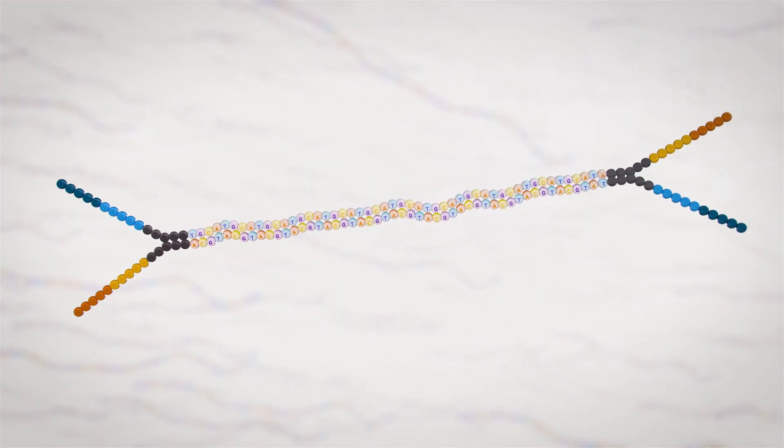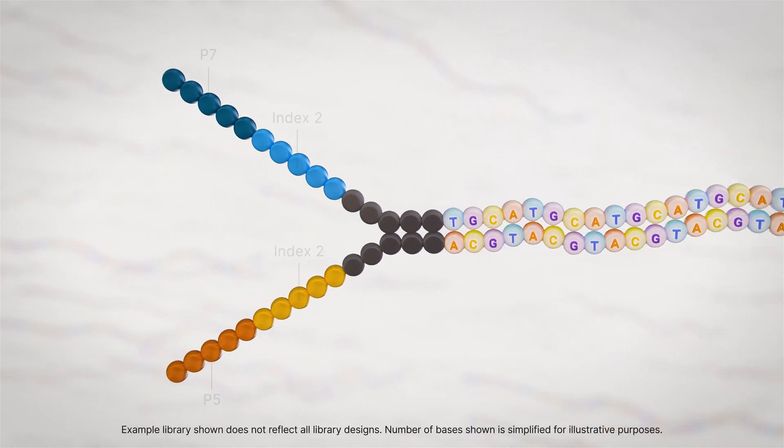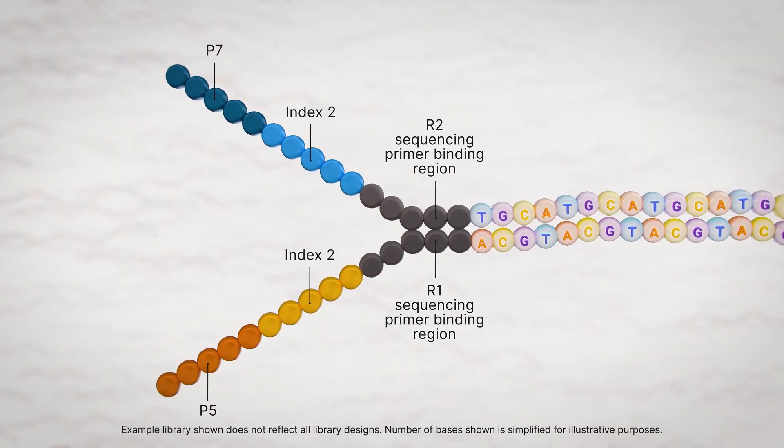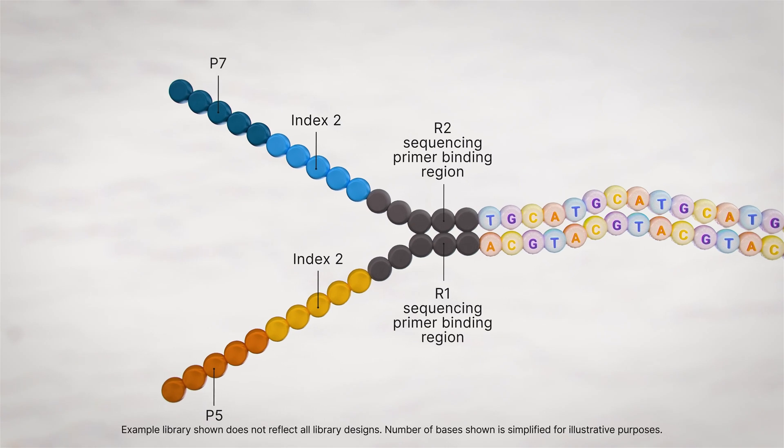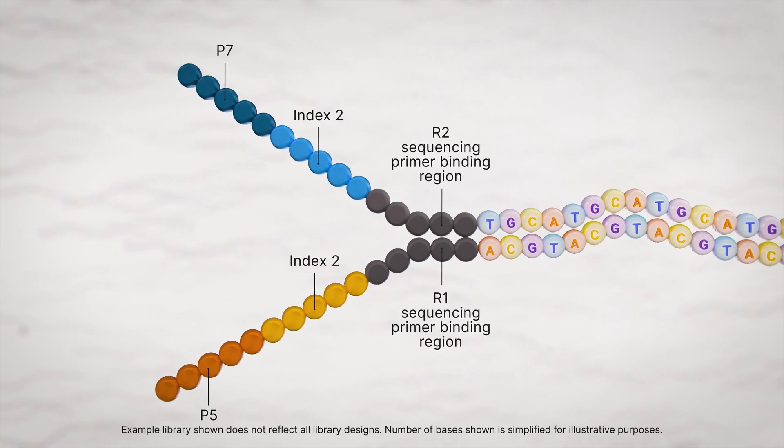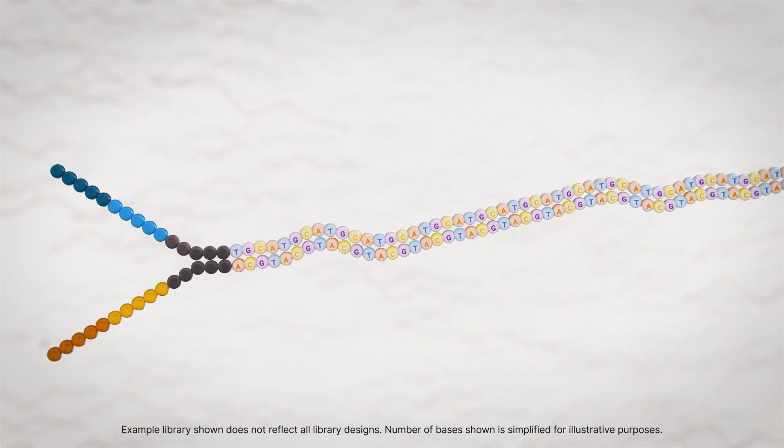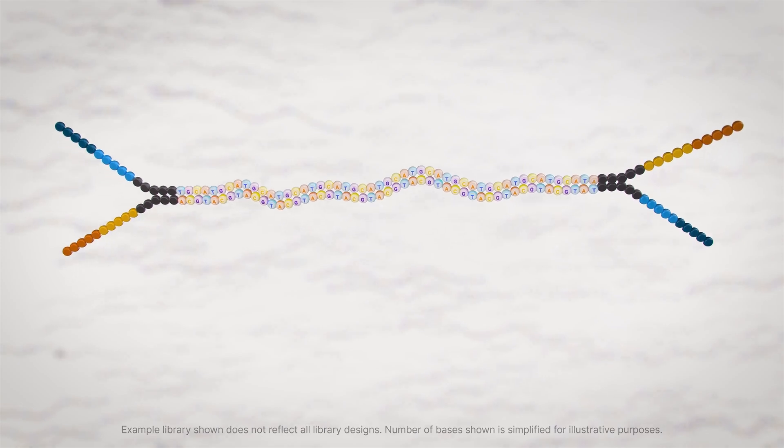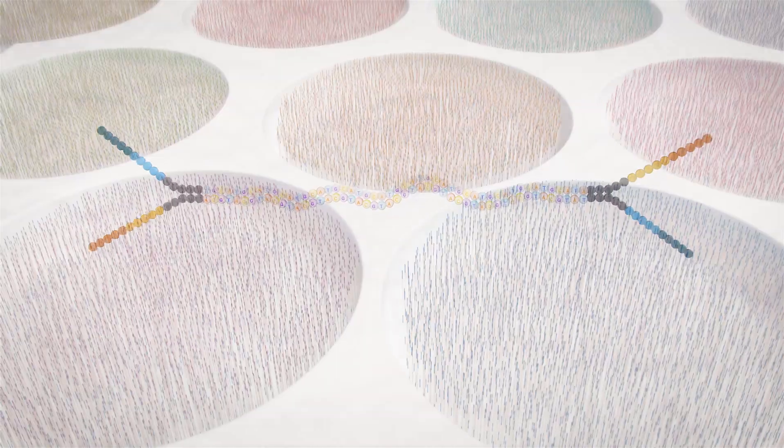Through library preparation, these adapters contain regions such as sequencing initiation sites, indexes for molecular barcoding, and regions that will bind or hybridize to complementary sequences on the flow cell. Clustering is a process where each library fragment molecule is amplified to create a cluster of identical copies on the flow cell surface.